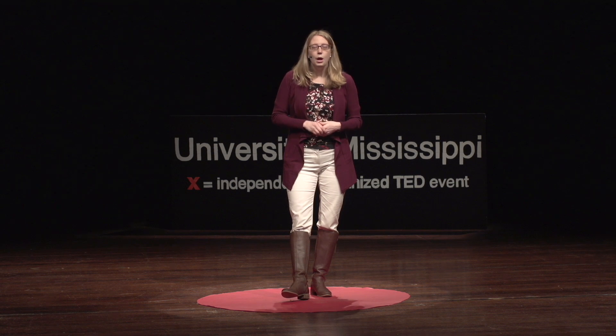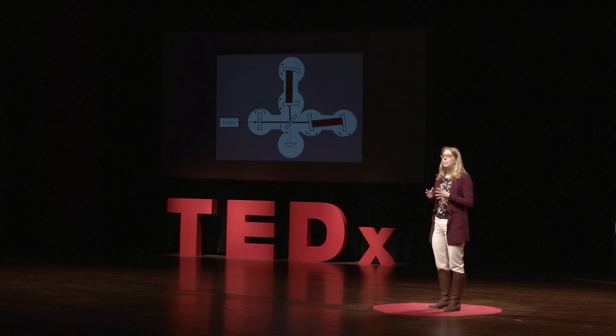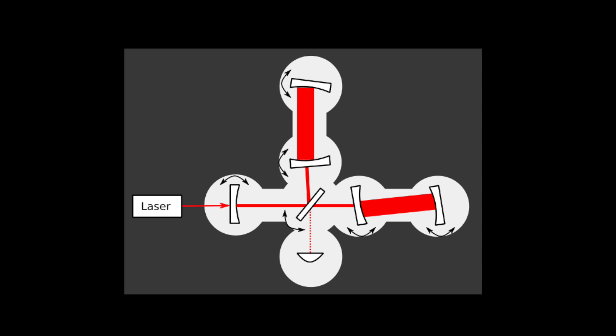I myself spent a total of seven years working at both the Livingston and the German detectors. One of my contributions has to do with this fact that we need to protect the mirrors from moving due to anything other than gravitational waves. One problem is that the laser light that we use in the interferometers is very powerful. And this light itself, as it is reflected off of the mirrors, it pushes on the mirrors, and can cause them to come out of orientation with respect to one another and be misaligned. I worked on a scheme to correct this misalignment.